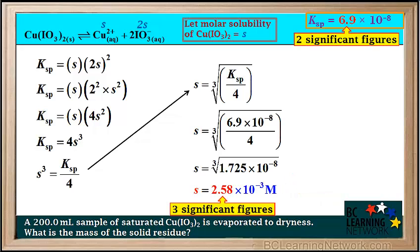Notice that we have one more significant figure than the given Ksp, which has two significant figures. So if this were a final answer, we'd need to round to two significant figures. Because this is only the first step in a multi-step problem, we show the value with one extra significant figure — this is standard practice in multi-step problems.